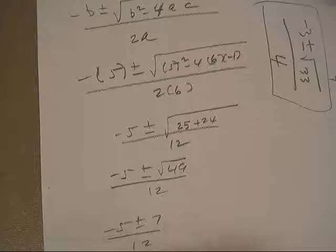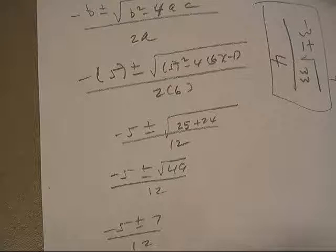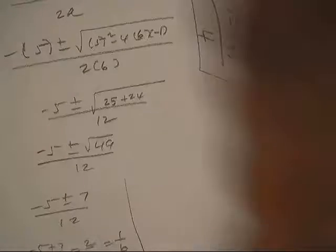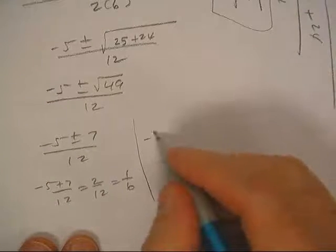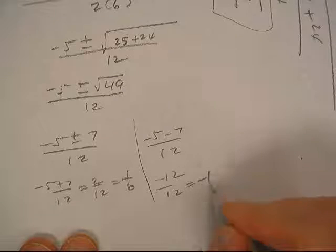So negative 5 plus 7 over 12, that's 2 over 12, that's 1 sixth.